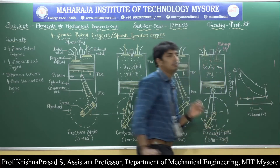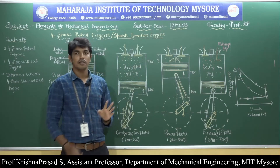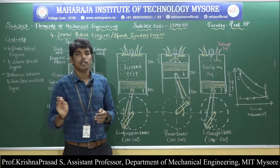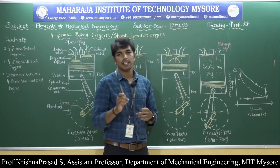Fourth stroke — exhaust stroke: the inlet valve is closed and the exhaust valve is open. The piston moves from BDC to TDC. Due to the upward movement, burnt gases — such as carbon monoxide, carbon dioxide, nitrogen dioxide, and sulfur dioxide — are expelled from the engine cylinder into the atmosphere through the exhaust valve. The crankshaft rotates 540 to 720 degrees, completing the working cycle in two full revolutions. The exhaust stroke is represented by line BA on the PV diagram.